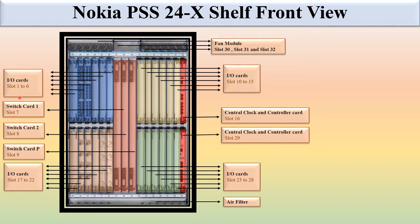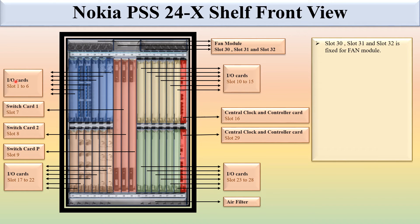Slots 1 to 6 (yellow), slots 10 to 15, slots 17 to 22 (orange), and slots 23 to 28 (green) — these 24 slots in total are fixed for the input/output card. Slots 30, 31, and 32 are fixed for the fan modules. Slots 7, 8, and 9 are fixed for the switch card. Slots 34, 35, 36, and 37 are fixed for the power card on the rear side.